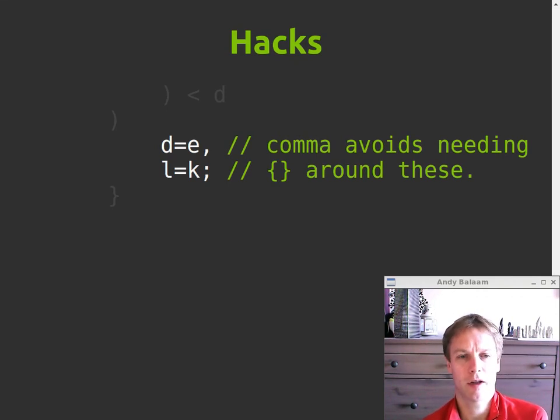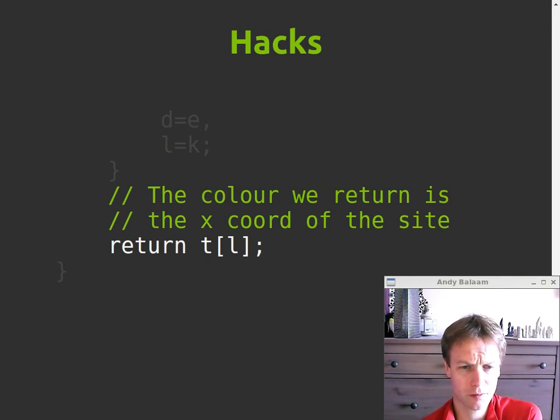Okay, other hacks. Oh yeah, well the other thing to mention is that we save some, a couple of curly brackets, if we use the comma here, between these two statements inside the if, instead of having two separate statements, we need a semi-colon instead of a comma and curly brackets to surround them. So that's a little hack that saves a few characters. And as I said before, the other hack is that the color is actually just the x coordinate of this site. So that was, that was how this code works. Pretty cool, I think you'll agree.